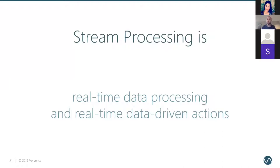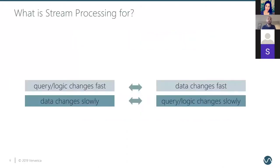They deploy it to production, everyone's happy, and now the engineering team says they understand what streaming is. What this team has done is taken the first step in understanding stream processing — they see it as a subcategory of data engineering. They view the world in two spheres: one of slow-changing data and one of fast-changing data.